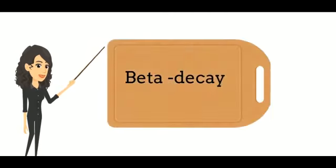In beta negative decay, the atomic number is increased by one with the emission of an electron and an antineutrino.